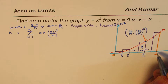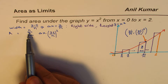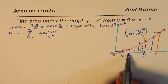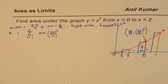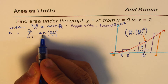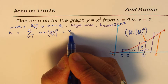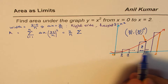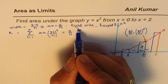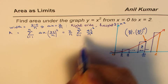The sum of all rectangles is: Σ (i=1 to n) of delta x × f(x) at the right-hand point. Since delta x = 2/n is constant, we write this as (2/n) × Σ (i=1 to n) of (2i/n)², which gives (2/n) × Σ of 4i²/n².